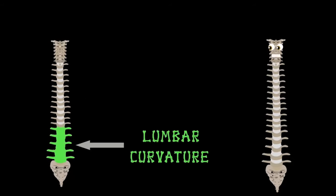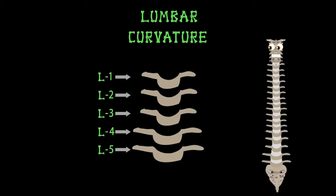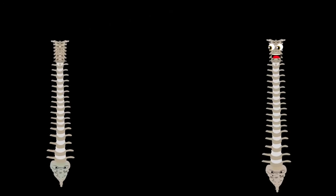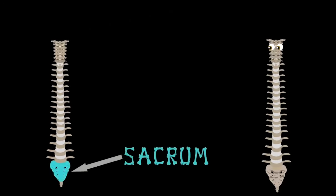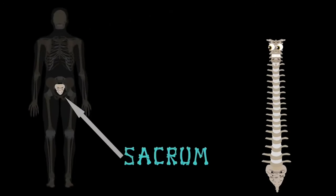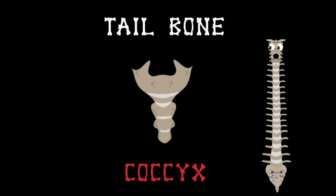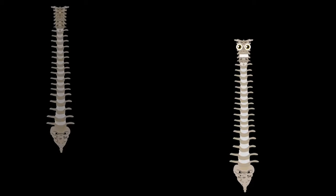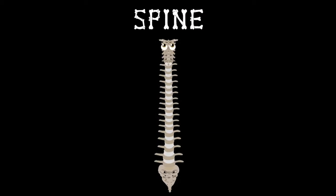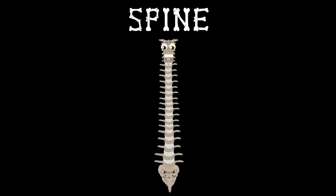At the bottom of this group begins the lumbar curvature. Five vertebrae start with the letter L. L1 through L5 brings you down to the sacrum — the fused bone between your hips and the pelvis. Below that is your coccyx, also called the tailbone. It's a triangular-shaped fused vertebrae.